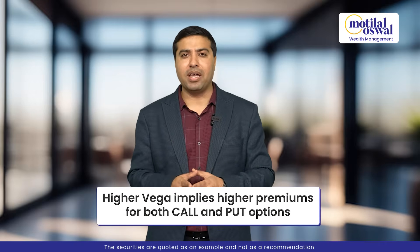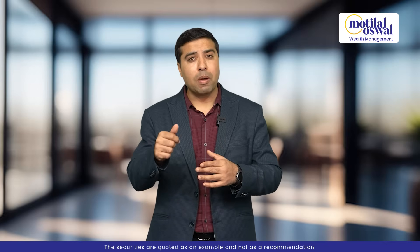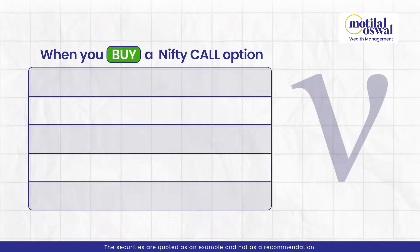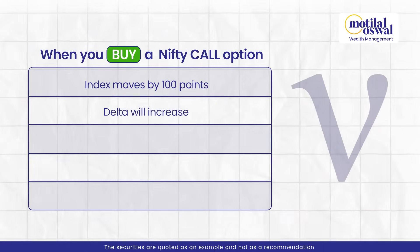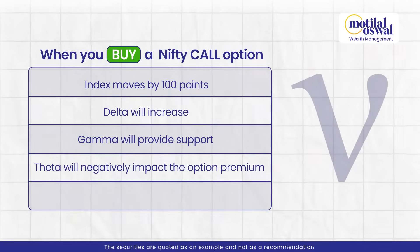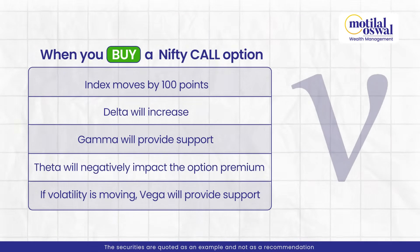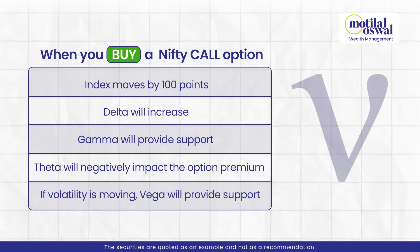Higher the Vega, the higher call and put premiums will be; lower the Vega, the lower the premiums. If the market moves up, your call premium will move up, but because of Theta, your premium will move comparatively lower. But if Vega rises, your premium will increase. For example, if the index moves by 100 points, your Delta will increase and Gamma will support, but Theta will hurt the option premium. And if volatility is moving, Vega will support; otherwise, if the market is moving, volatility usually declines, so your premium will decline.